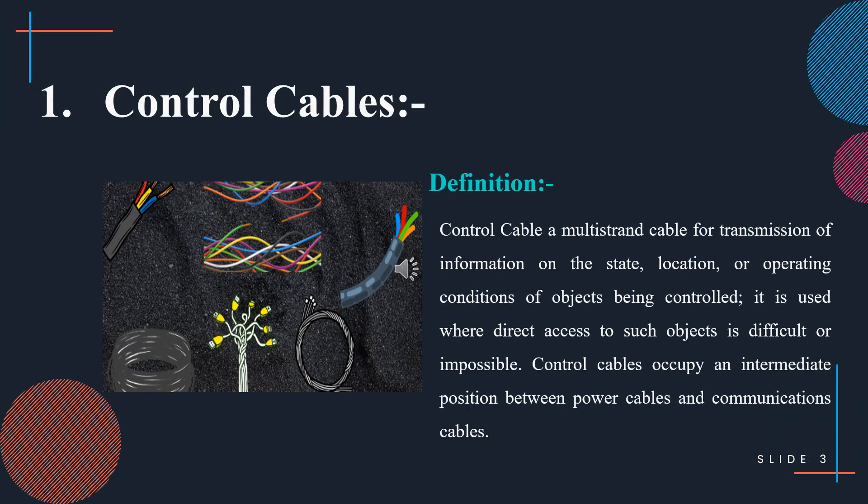A control cable is just like a rope in structure. These control cables are made from carbon steel and corrosion-resistant steel. Very thin wires or strands are bundled together to make a control cable. These control cables are used to transmit power and are used in difficult locations where direct access is difficult.